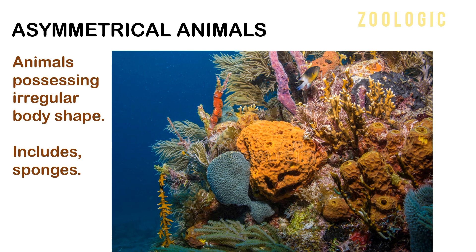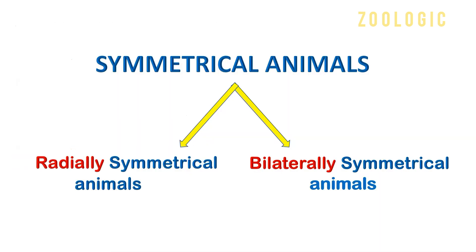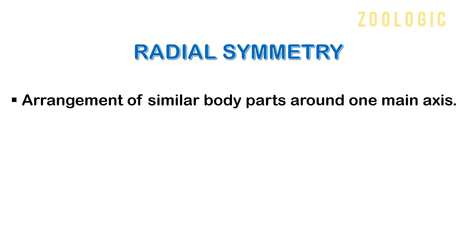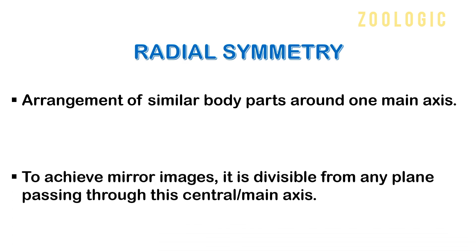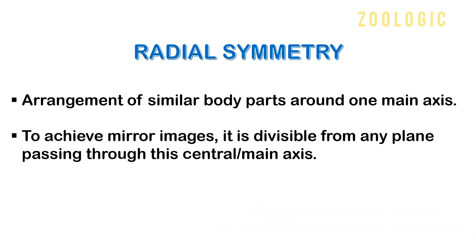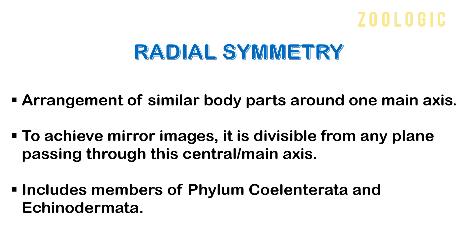Symmetrical animals are further classified into two branches: radially symmetrical animals and bilaterally symmetrical animals. Radial symmetry is the arrangement of similar parts around a central body axis — that is one main axis — and the organisms can be divided into two identical halves by any plane passing through the main axis to achieve mirror images. Animals possessing radial symmetry are termed radially symmetrical animals.